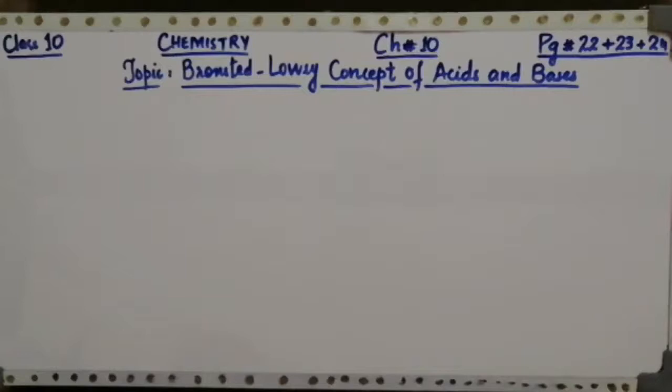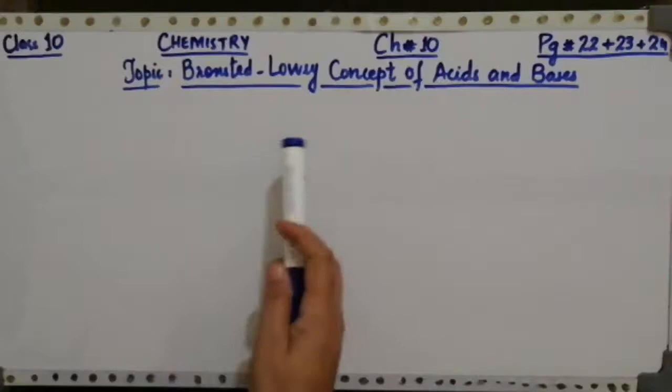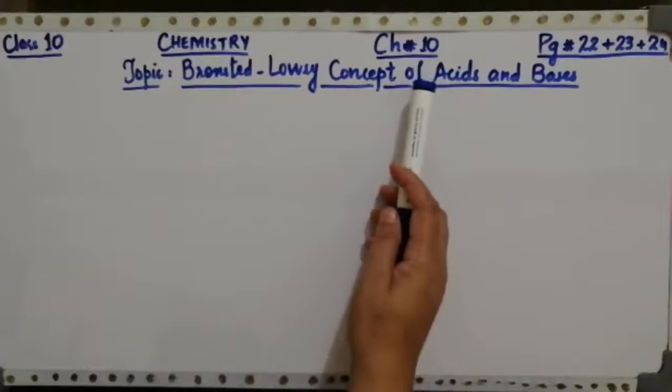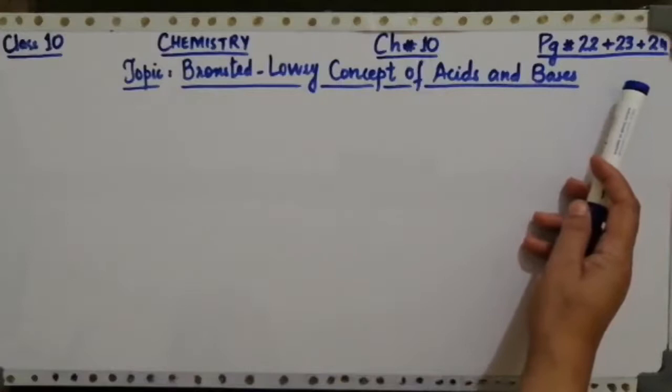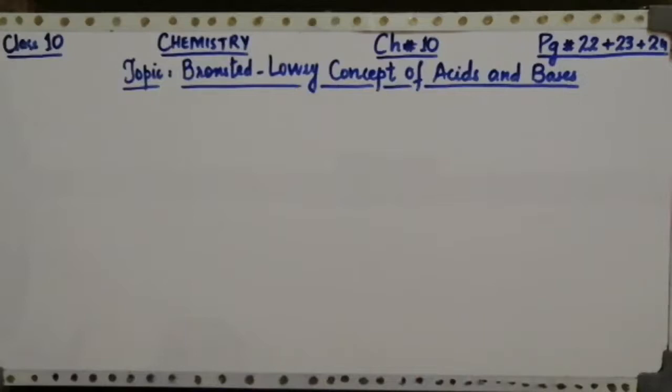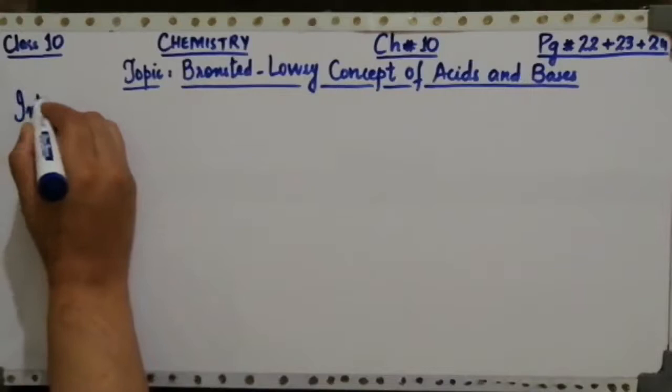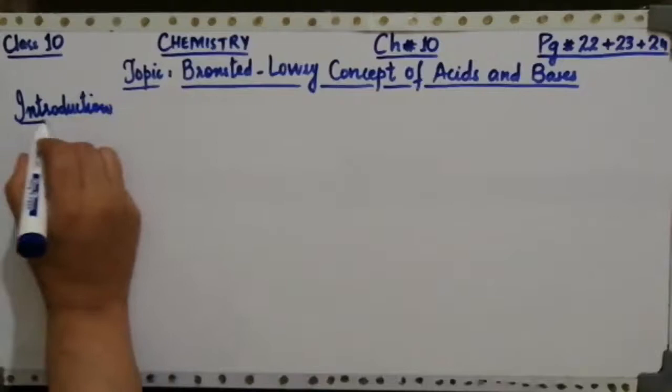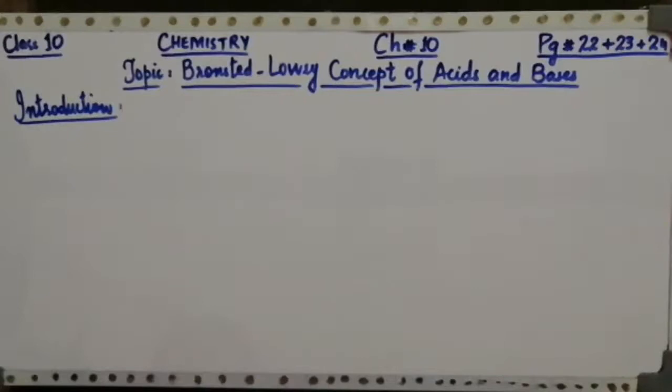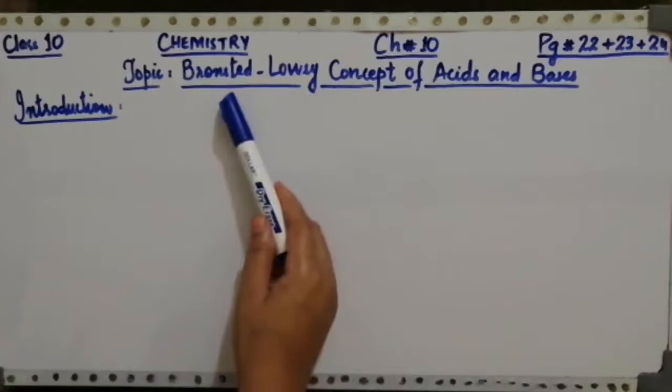Bismillahirrahmanirrahim, Assalamu alaikum. Welcome to chemistry class for grade 10. Today we will discuss the topic Bronsted-Lowry concepts of acids and bases, which is mentioned in your chapter number 10, Acid Bases and Salts, on pages 22, 23, and 24. Before starting this topic, you must know some introduction about this concept.